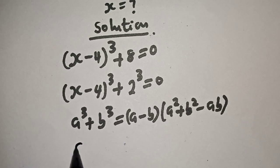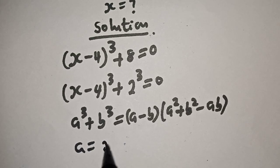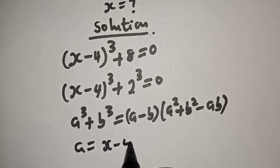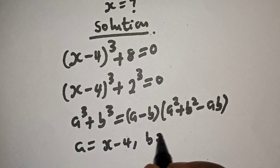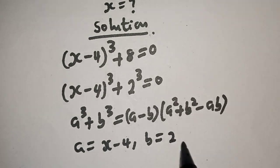Then, here, a is equal to x minus 4, and b is equal to 2.